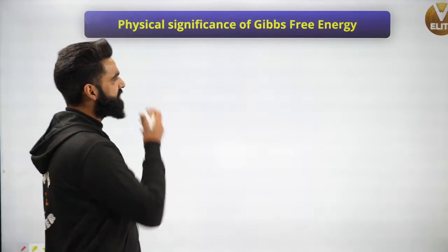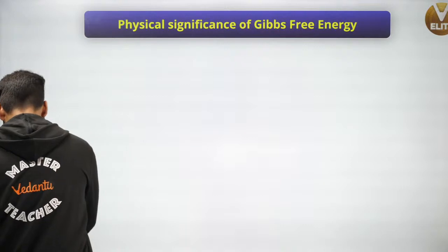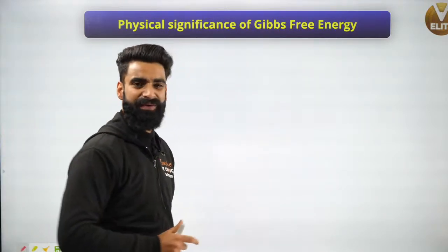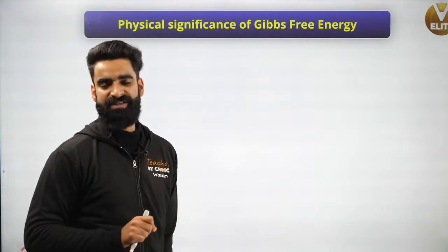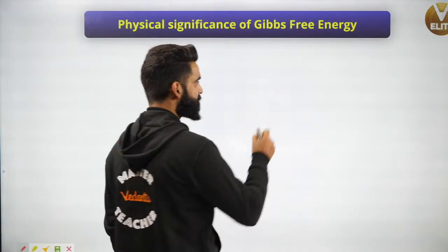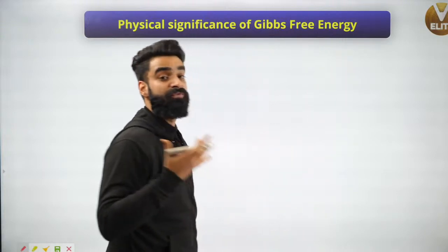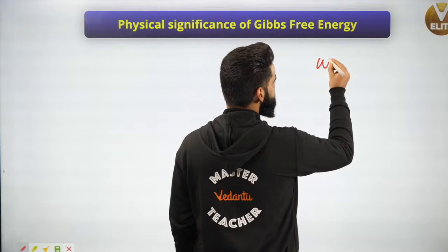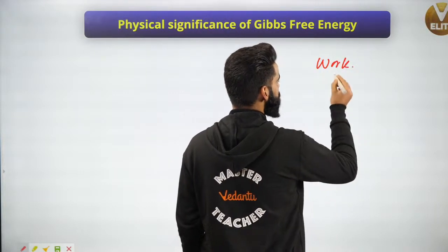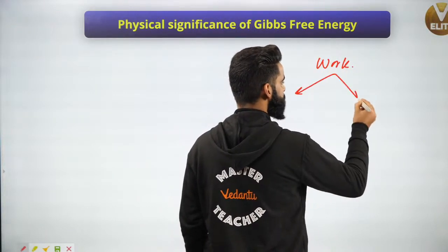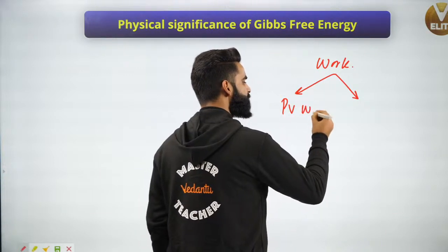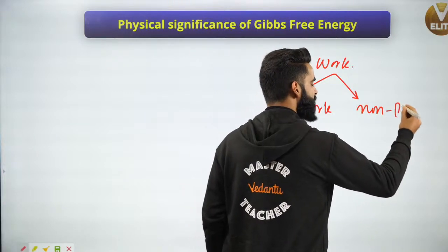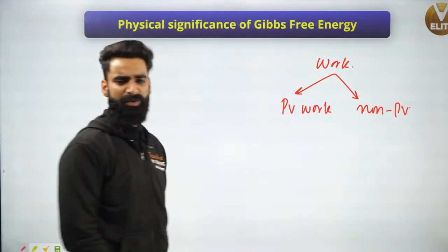Now the physical significance of Gibbs free energy. Before discussing it, I need to explain types of work. We classify work into two types: PV work and non-PV work. Non-PV work is also called useful work.